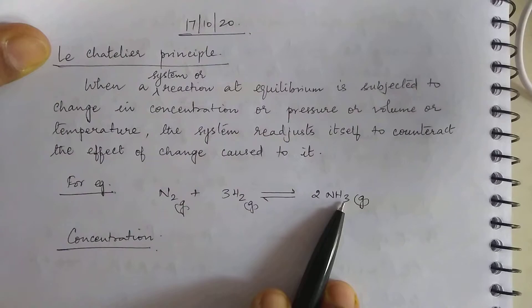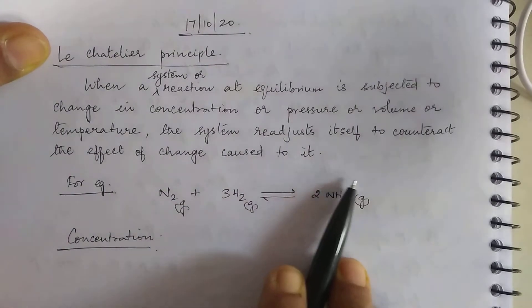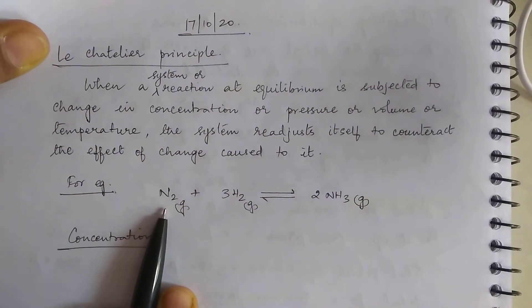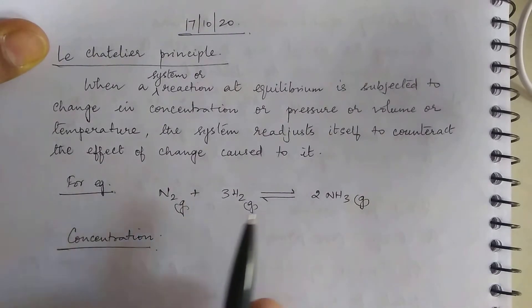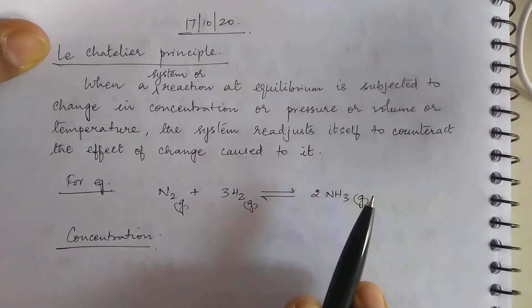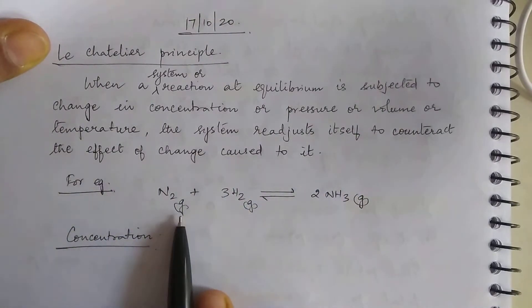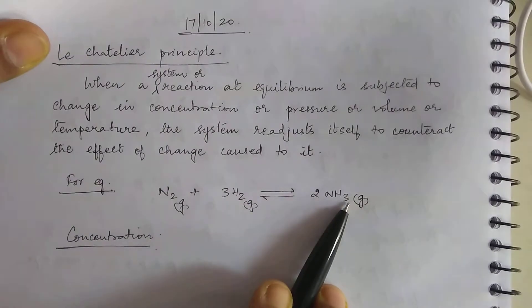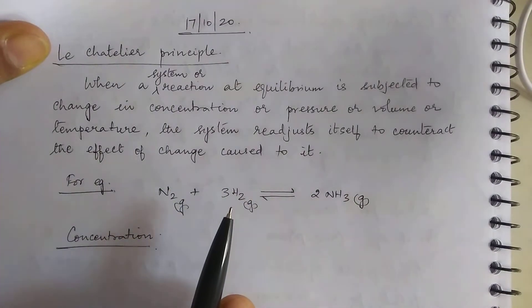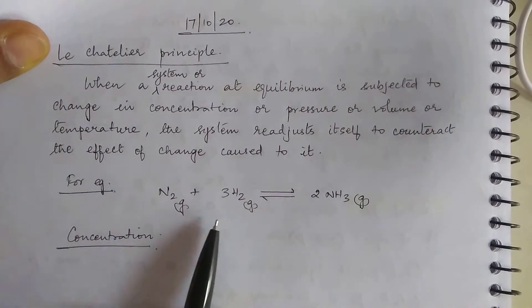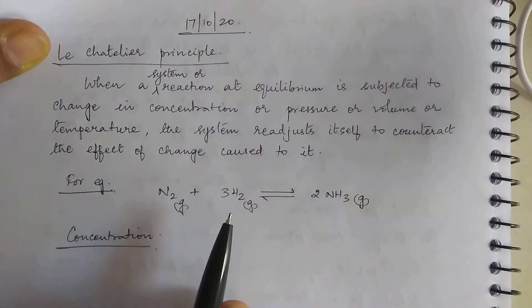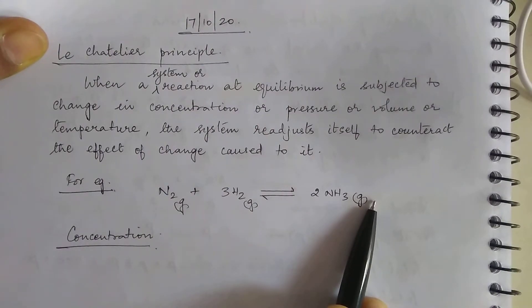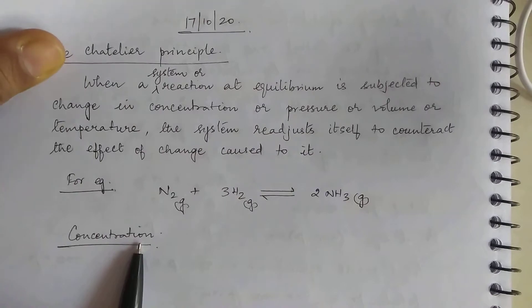If I add ammonia, the system recognizes that too much ammonia is present and moves in the backward direction to produce more nitrogen and hydrogen. In summary: anything in excess will be consumed, and the reaction shifts in the direction that consumes it; any deficiency will be produced, shifting the reaction in the direction that produces it. This is how concentration changes work.